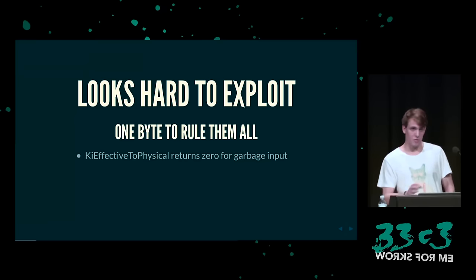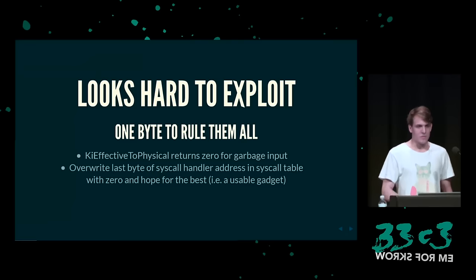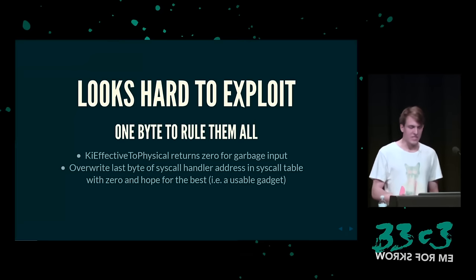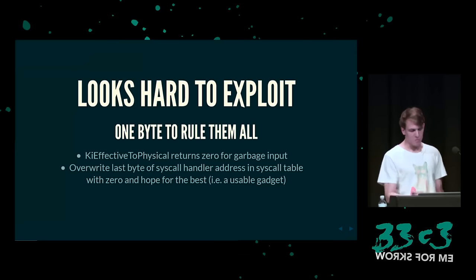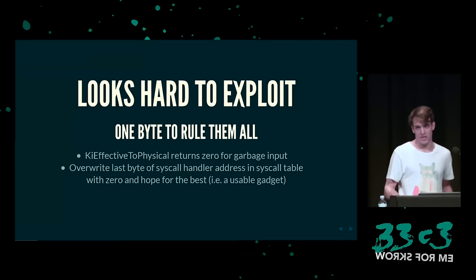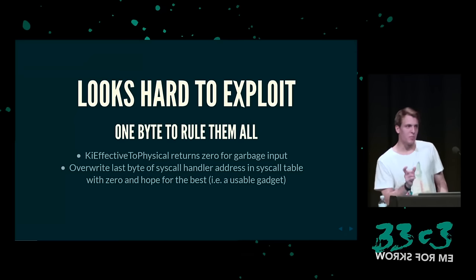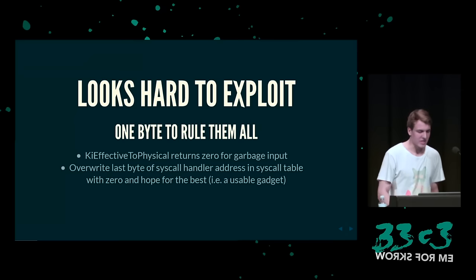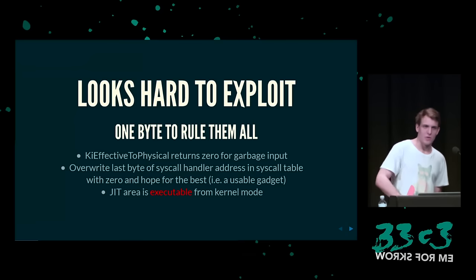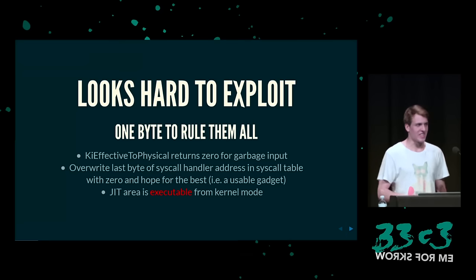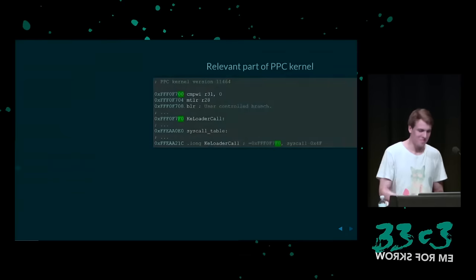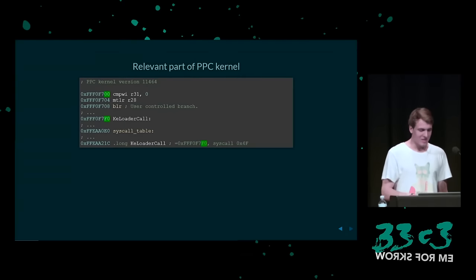KI-Effective-to-Physical gibt einfach Null zurück für jeden Müll, den wir eingeben. Es ist eine ziemlich große Chance, dass da Garbage reinkommt, wenn wir das auf einem anderen Teil des Kernels zeigen. Die Strategie ist, dass wir die Curl-Handler-Adresse nehmen, nur die letzten Bytes überschreiben, und gehofft haben, dass die neue Adresse auf einen User-Login zeigt. Außerdem läuft eine JIT-Area, die man aus dem Kernel-Mode befüllen kann.